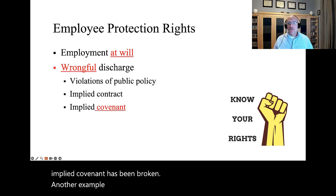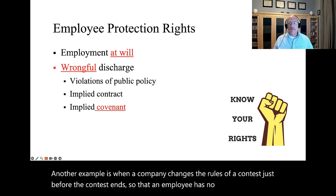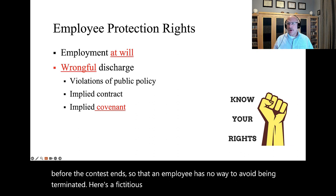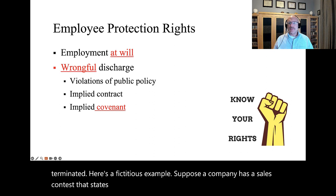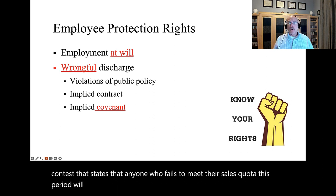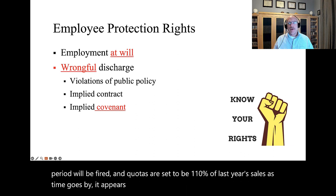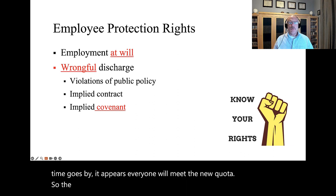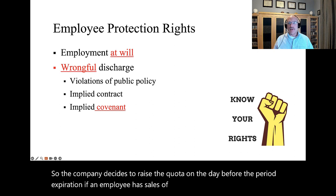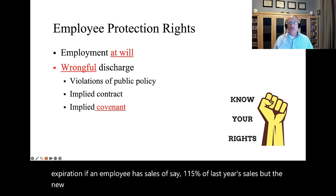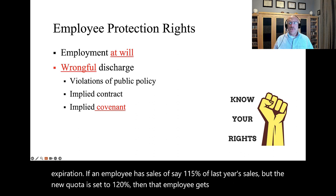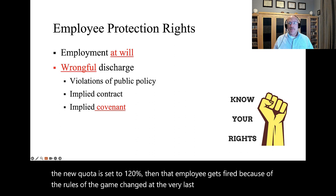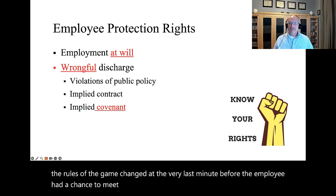Another example is when a company changes the rules of a contest just before the contest ends so that an employee has no way to avoid being terminated. Here's a fictitious example: suppose a company has a sales contest that states that anyone who fails to meet their sales quota this period will be fired, and quotas are set to be 110% of last year's sales. As time goes by, it appears everyone will meet the new quota, so the company decides to raise the quota on the day before the period expiration. If an employee has sales of 115% of last year's sales, but the new quota is set to 120%, then that employee gets fired because the rules of the game changed at the very last minute before the employee had a chance to meet it. That's a violation of an implied covenant.